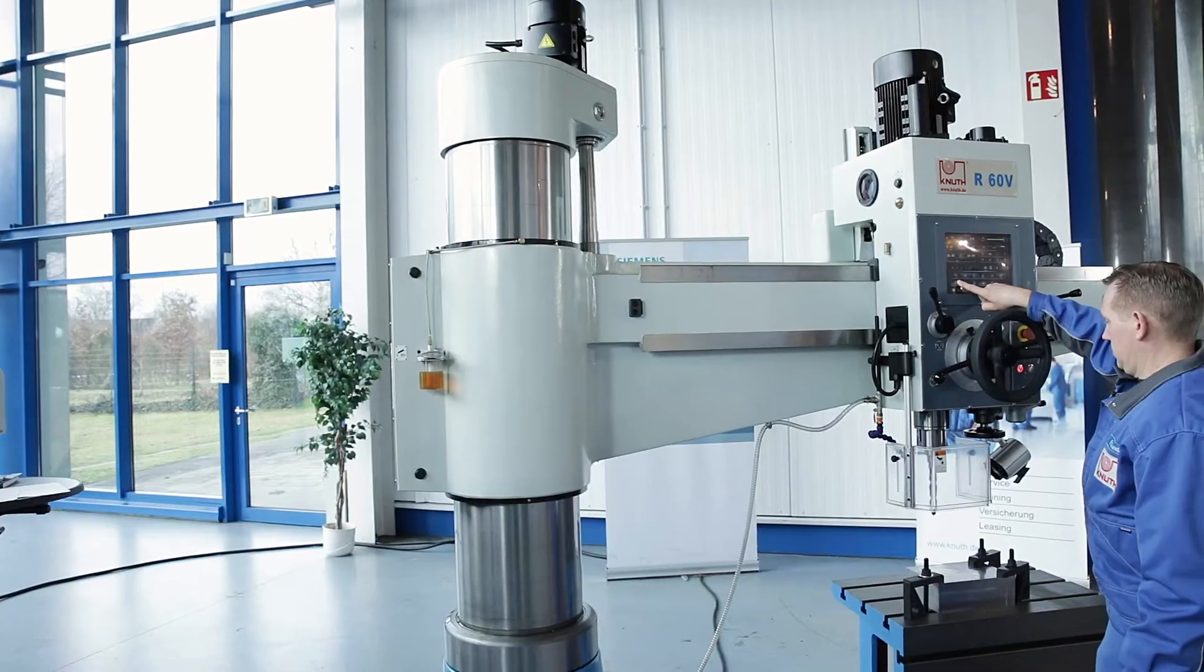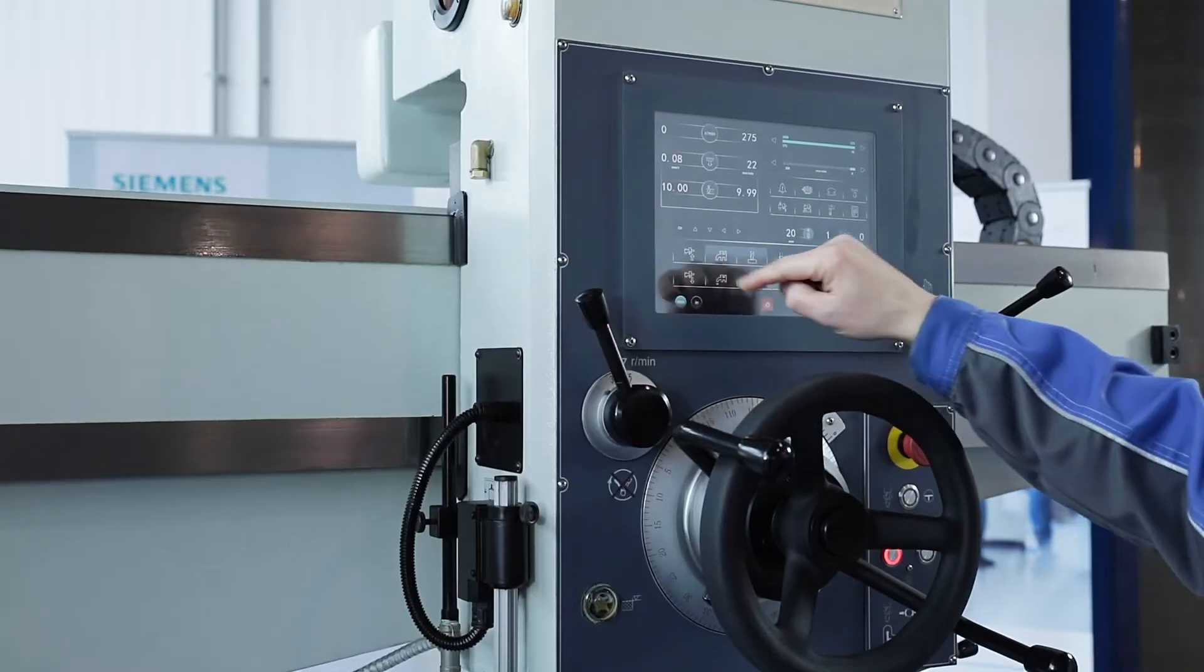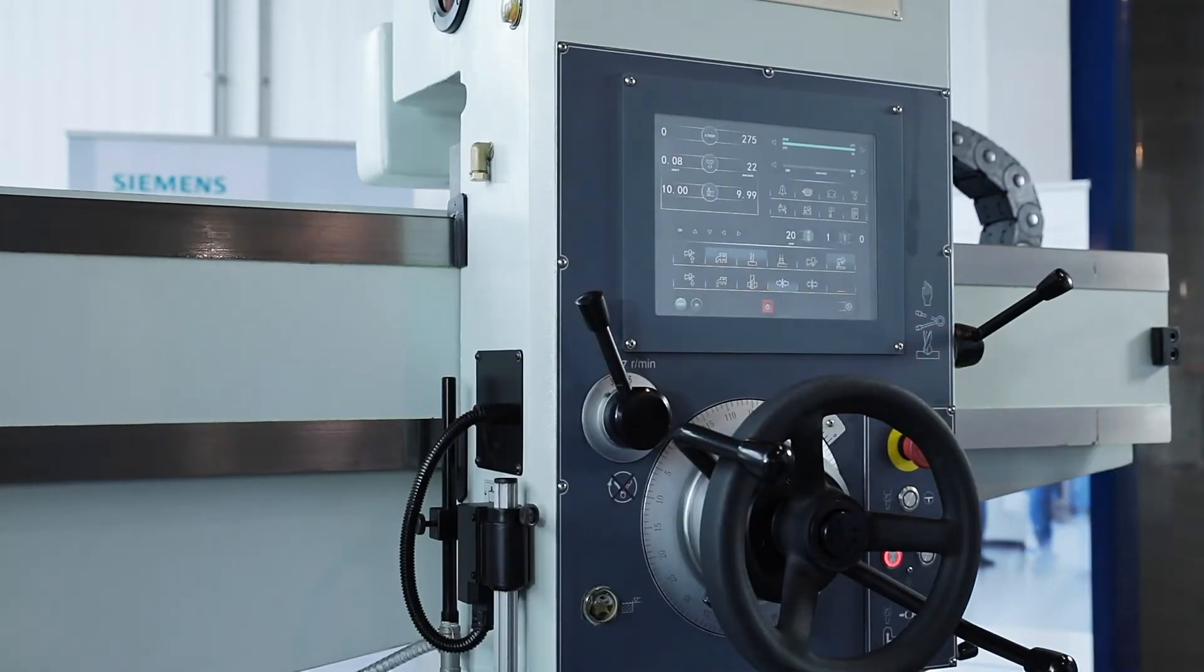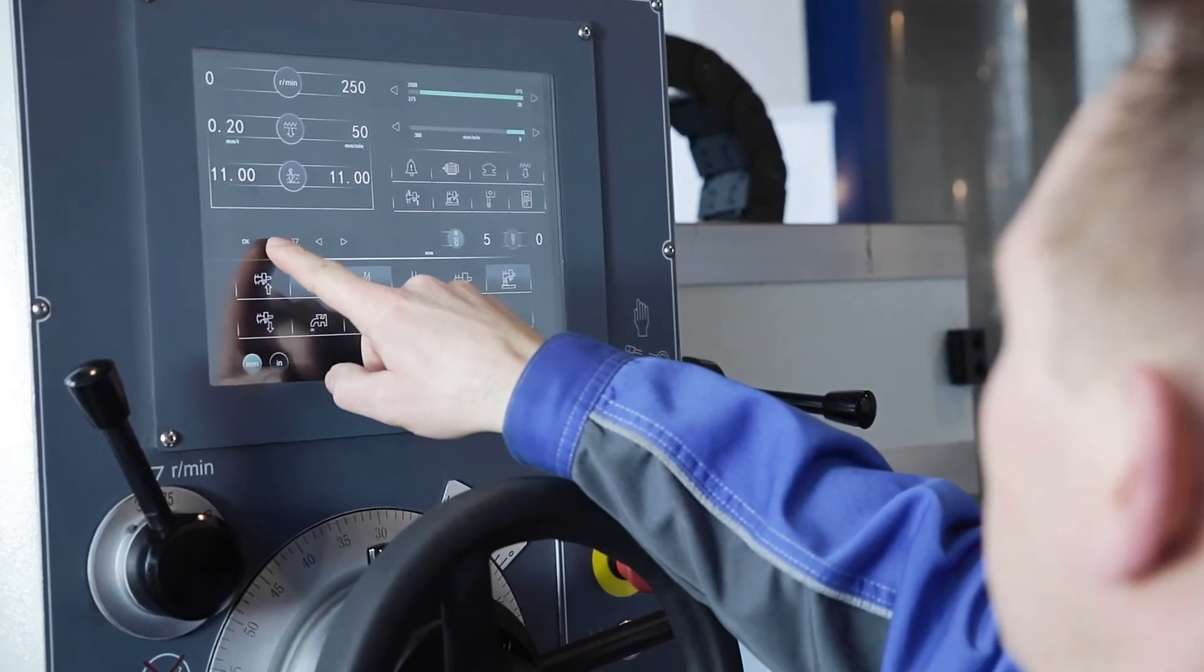The operator sets the arm's height by touching the respective icon, whereupon the system automatically releases and fixates the hydraulic clamps, turns off the lift motor, and considers all set limit stops.